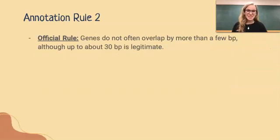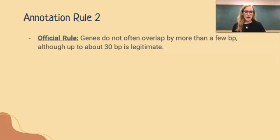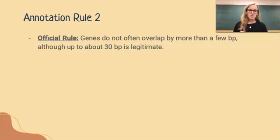The second rule of annotation reads: genes do not often overlap by more than a few base pairs, although up to about 30 base pairs is legitimate. In a phage genome, space is incredibly limited, so some genes will overlap to save space. Overlaps are expected and they're often not extreme, which is why 30 base pairs is the maximum you can generally allow for.